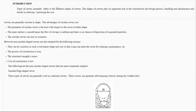Further, we will classify these systems on the basis of separate and combined systems in this lecture. Types of sewers normally refer to different shapes of sewers. The shapes of sewers play an important role in construction and designing processes, handling and maintenance, and in reducing or increasing cost. So when we are designing any system, we have concerns about its cost and maintenance.